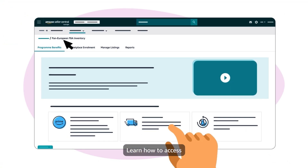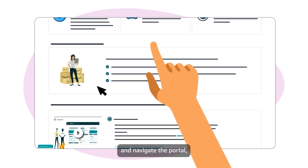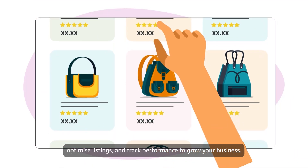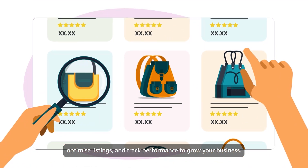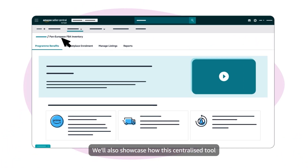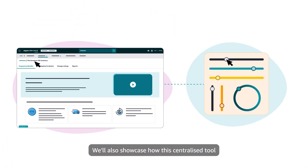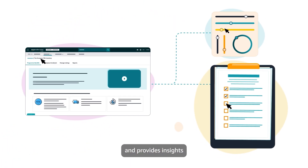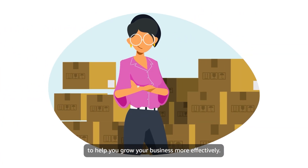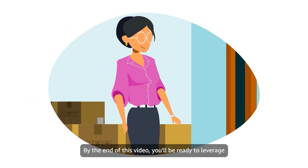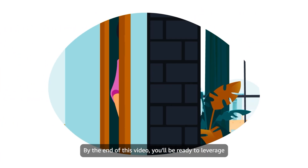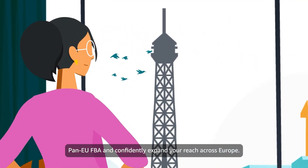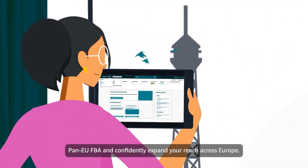Learn how to access and navigate the portal, manage your inventory, optimize listings, and track performance to grow your business. We'll also showcase how this centralized tool streamlines operations and provides insights to help you grow your business more effectively. By the end of this video, you'll be ready to leverage Pan-EU FBA and confidently expand your reach across Europe.